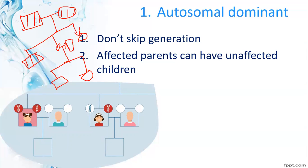For autosomal dominant, consider a first generation male and female. If the male is heterozygous — capital T and small t — capital T is the dominant allele. The dominant character can express itself on its own. This is a key feature of autosomal dominant inheritance.